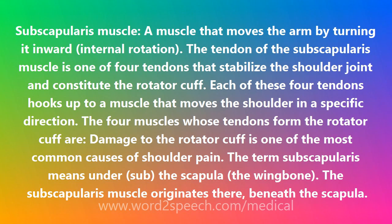The tendon of the subscapularis muscle is one of four tendons that stabilize the shoulder joint and constitute the rotator cuff. Each of these four tendons hooks up to a muscle that moves the shoulder in a specific direction. Damage to the rotator cuff is one of the most common causes of shoulder pain.